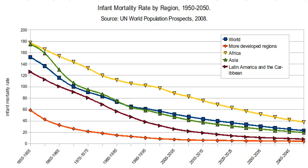Many countries, including France and Japan, only count as live births cases where an infant breathes at birth, which makes their reported IMR numbers somewhat lower and increases their rates of perinatal mortality. In the Czech Republic and Bulgaria, requirements for live birth are even higher. Although many countries have vital registration systems and reporting practices, there are many inaccuracies, particularly in undeveloped nations, in the statistics of infant deaths.